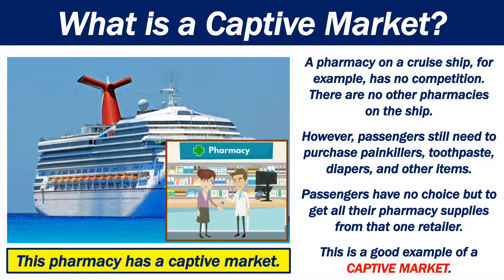A pharmacy on a cruise ship, for example, has no competition. There are no other pharmacies on the ship. However, passengers still need to purchase painkillers, toothpaste, diapers, and other items. Passengers have no choice but to get all their pharmacy supplies from that one retailer. This is a good example of a captive market.